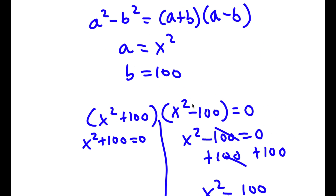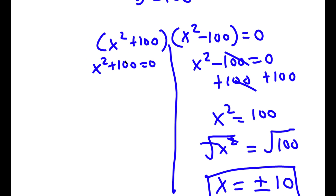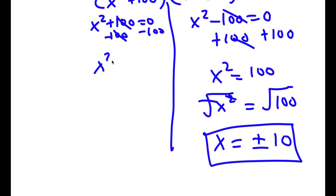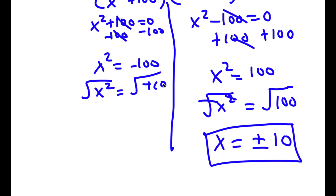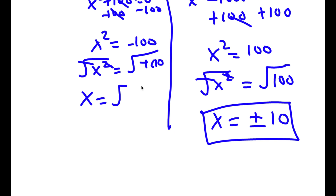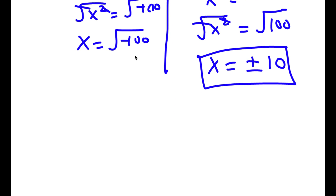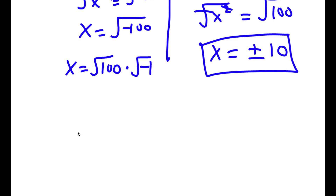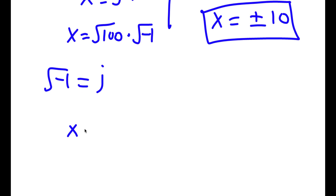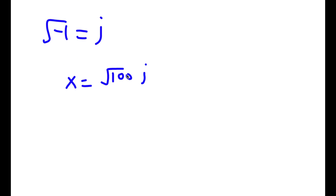So this is two solutions to this equation. Now for our two other solutions, for x squared plus 100 equals 0, I'm going to subtract 100 on both sides — these two cancel out — and I have x squared is equal to negative 100. Taking the square root on both sides, x is equal to the square root of negative 100. I can rewrite this as the square root of 100 times the square root of negative 1. The square root of negative 1 is equal to the imaginary number i. So x is equal to plus or minus 10i.